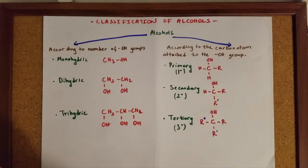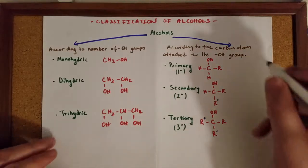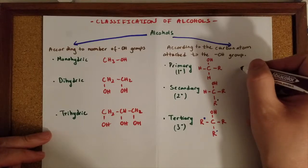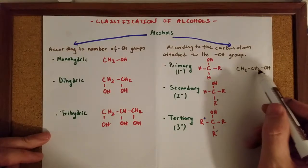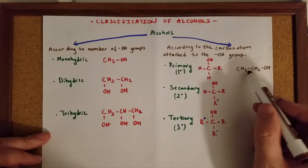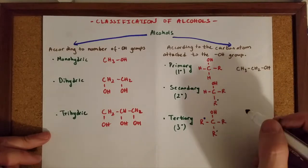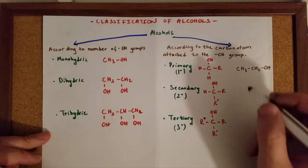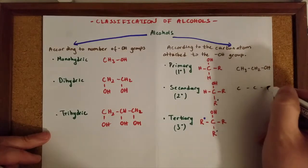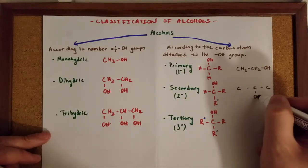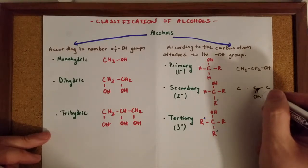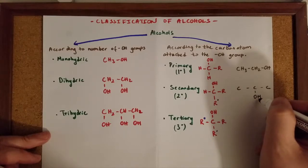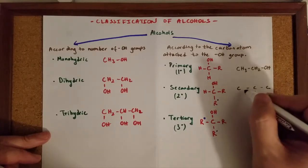Let's give some simple examples for each. For example, ethanol is a primary alcohol, because the carbon atom which is attached to the OH group is connected to only one radical. For secondary, we have three carbon atoms and the OH group is on the second carbon atom. This alcohol is a secondary alcohol because the carbon atom which is attached to the OH group is connected to two radicals.